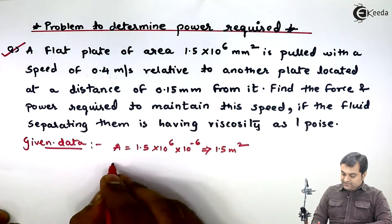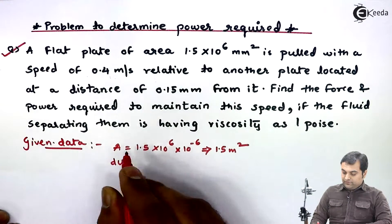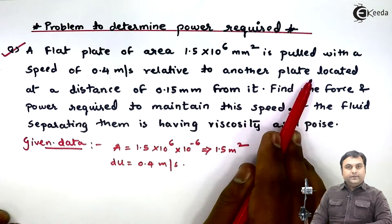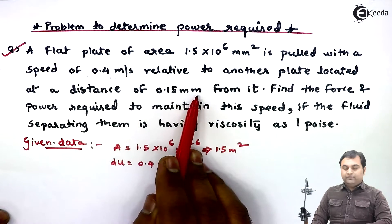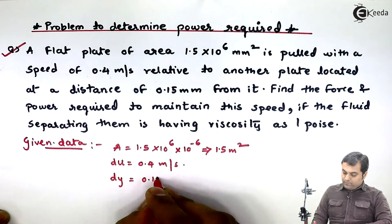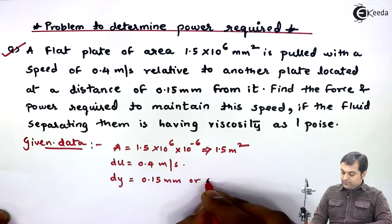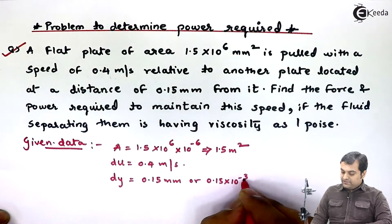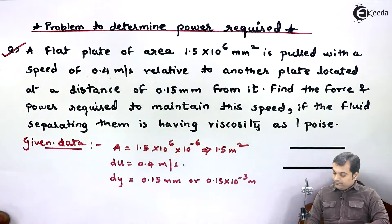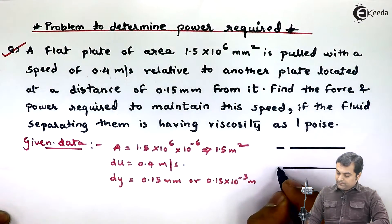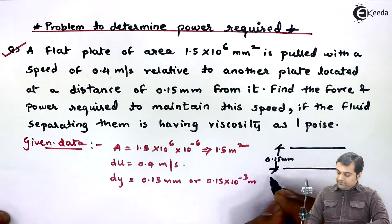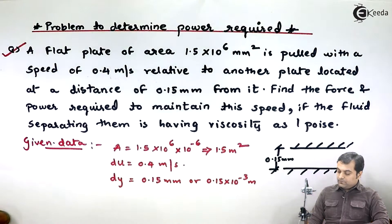The velocity — this is the change in velocity du — only one value is given, that is 0.4 meter per second. The distance between the plates, dy, is 0.15 mm, which is 0.15 × 10⁻³ meter. We have two plates separated by 0.15 mm with fluid between them.